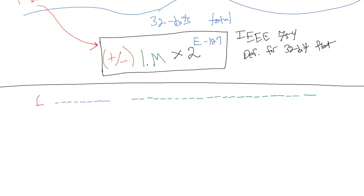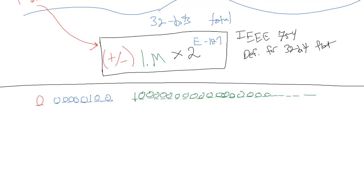So I'm going to make the sign bit 0. Let's make the mantissa 0, 0, 0, 0, 0, 1, 0, 0, 0 — continuing with zeros for the remaining bits. And for the exponent field, let's use the value that gives us 8 — so the bits represent 8 in that field. The rest of the mantissa will be all zeros.